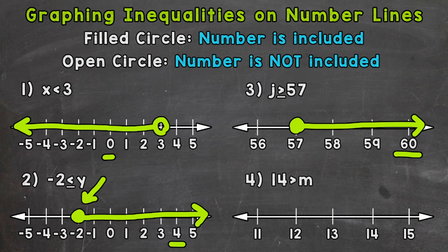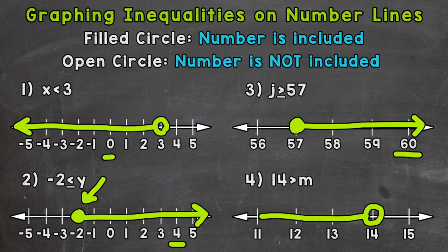Let's move on to number 4 where we have 14 is greater than m. Since we do not have an or equal to symbol — just a greater than symbol — we use an open circle because we do not want to include 14. Correct solutions are any numbers less than 14, represented by an arrow pointing to the left. For example, if m equals 13: 14 is greater than 13 — yes, that is correct. We have an infinite amount of solutions, and the open circle indicates 14 is not included.